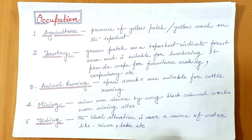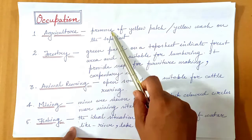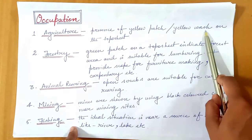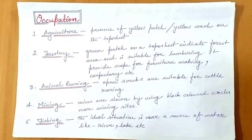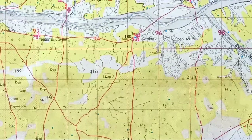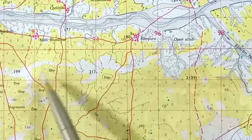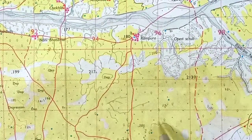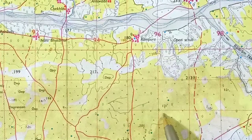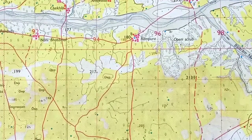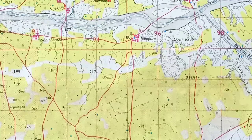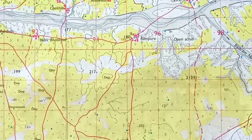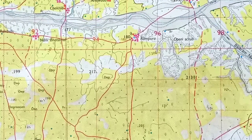If we have to find out the agricultural area in a topographical map, then we will look for a yellow patch or yellow wash — that means the yellow portion in a topographical sheet. The yellow portion here in this map indicates cultivable land, or land which is fit for agriculture. So definitely the people living in this area are involved in agriculture.